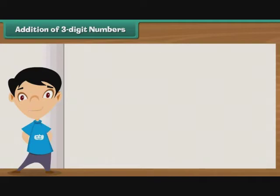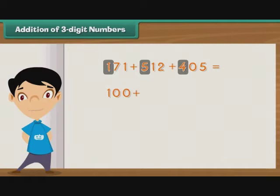Addition of three-digit numbers. Let us now see how we can simplify the addition of numbers with three or more digits. Let us try and add 171, 512, and 405. To simplify the addition, we proceed according to place values. Let us begin with the digits at the hundreds place, that is, 1, 5, and 4. We add 100, 500, and 400. The sum is 1000.